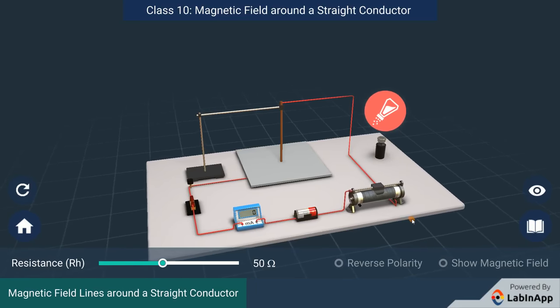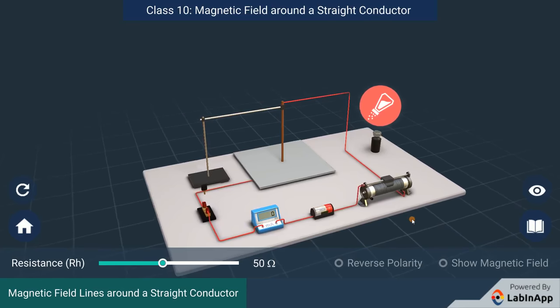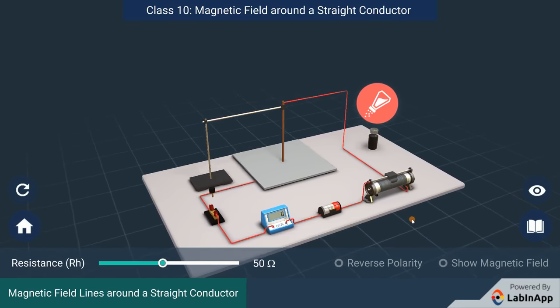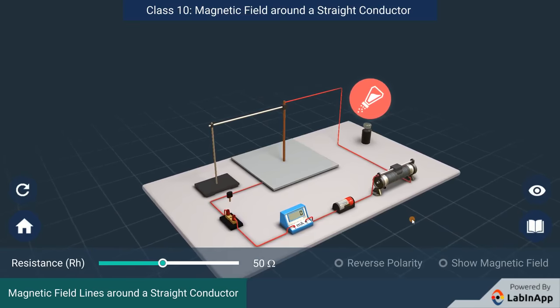We know that a current carrying conductor behaves like a magnet. So, what is the pattern of this magnetic field? Let us do an activity to find out the pattern around it.